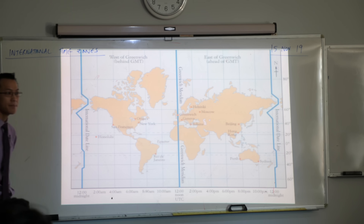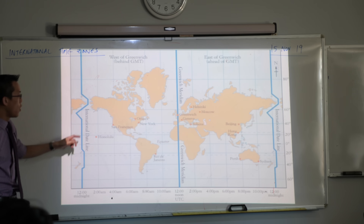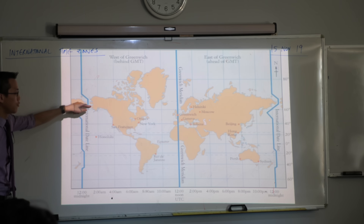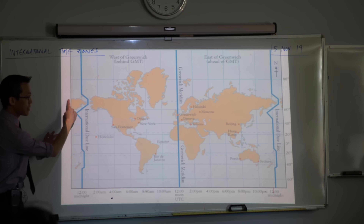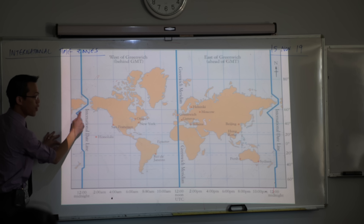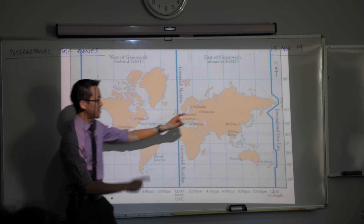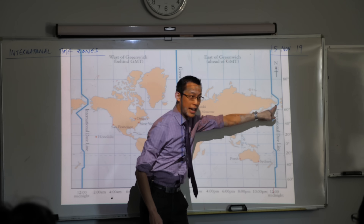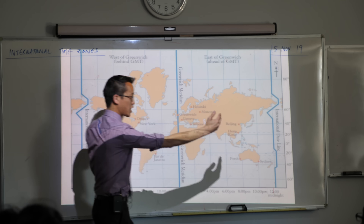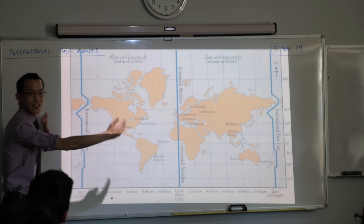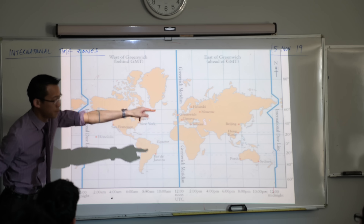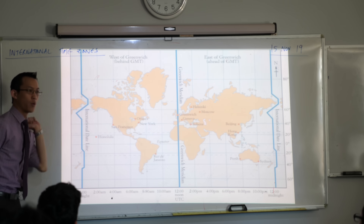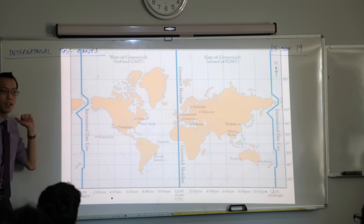Is there only one international date line? Well, this international date line here — if you have a look at this landmass over here, it's that same landmass. They've just expanded it so you can see it from both perspectives: from an eastward perspective and a westward one.